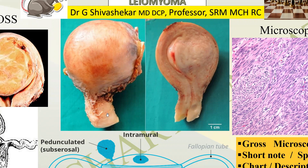I am finding a resected specimen of the uterus with cervix. This elongation is the cervix and what is seen in this picture is the external surface. It is not just round — it is bosselated, it is bulging, and we will always have to see a cut surface.